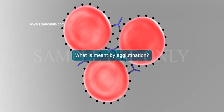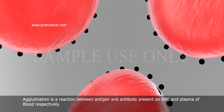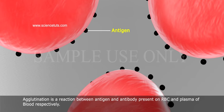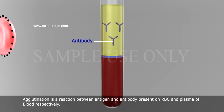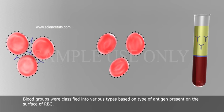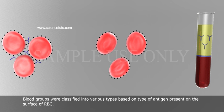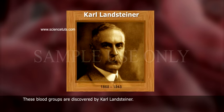What is meant by agglutination? Agglutination is a reaction between antigen and antibody present on RBC and plasma of blood respectively. Blood groups were classified into various types based on the type of antigen present on the surface of RBC. These blood groups were discovered by Karl Landsteiner.